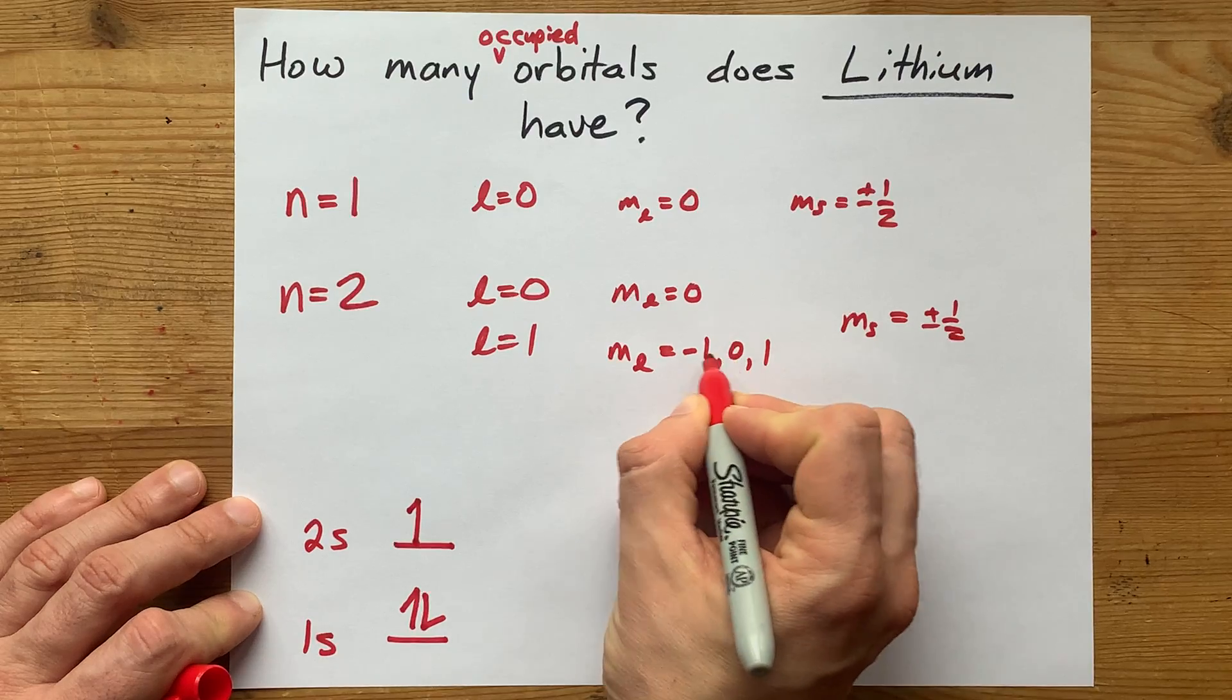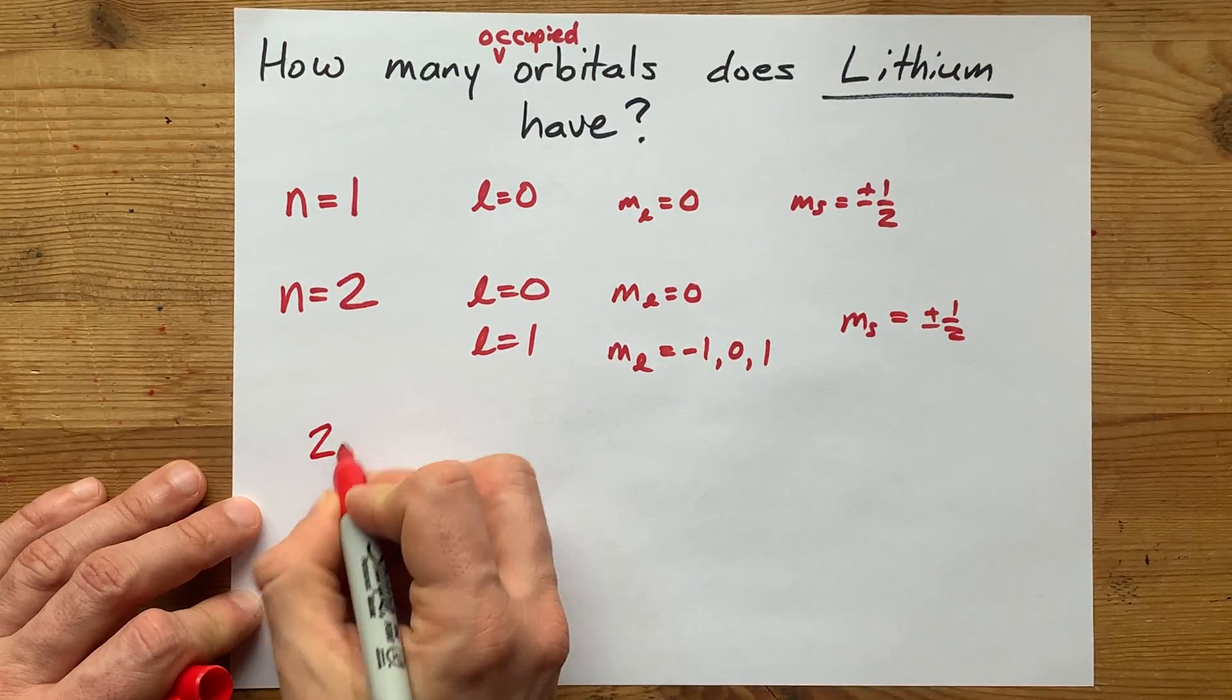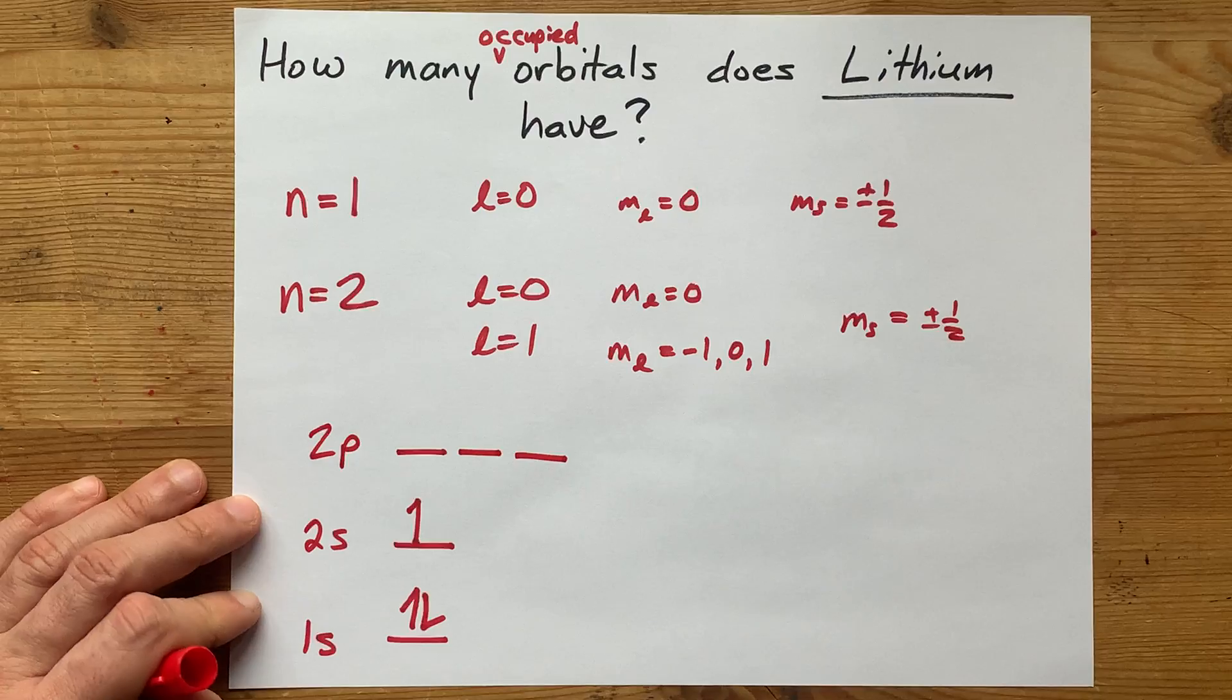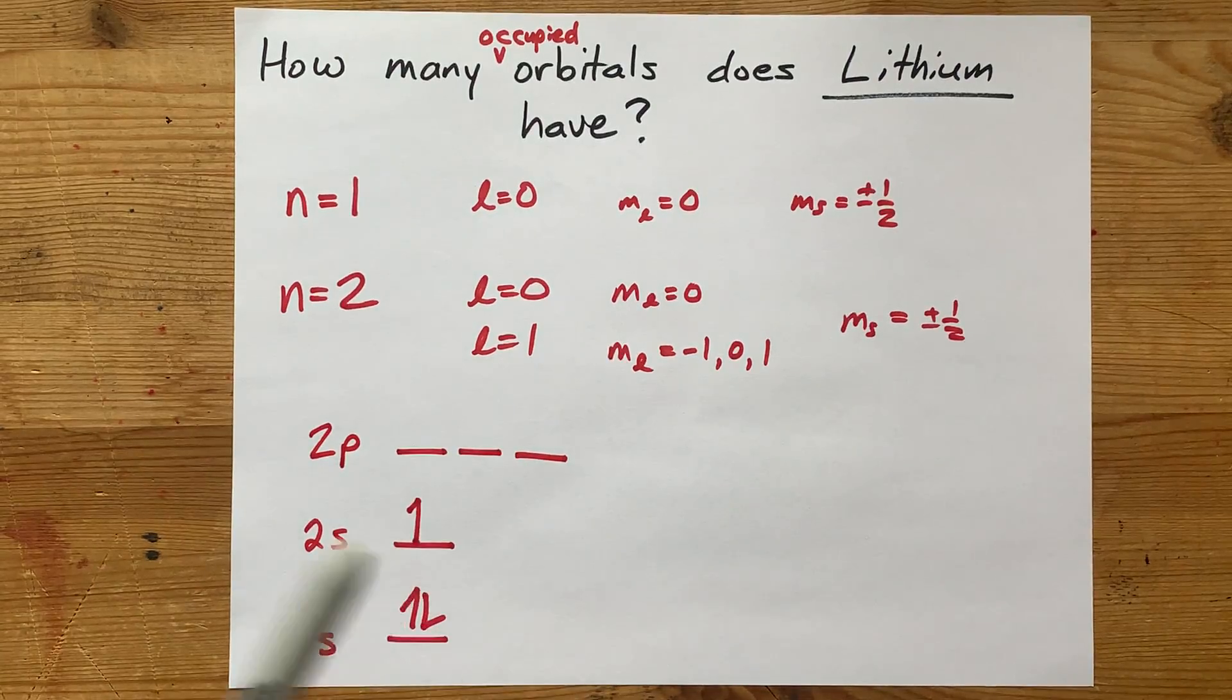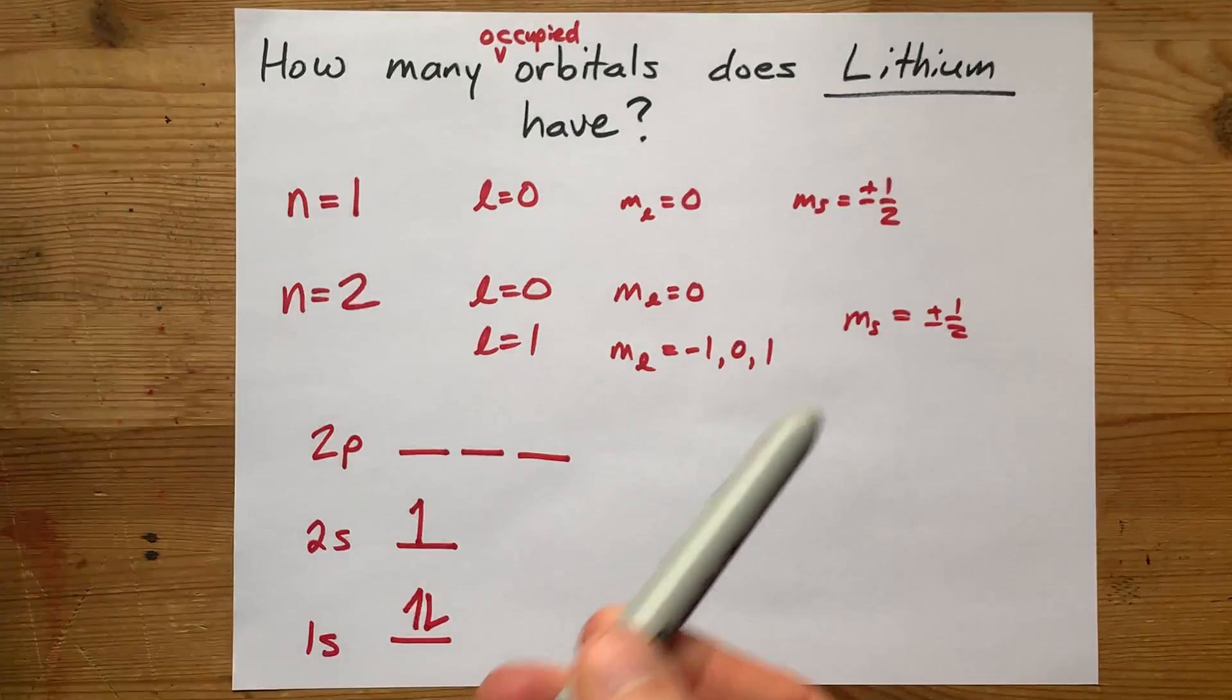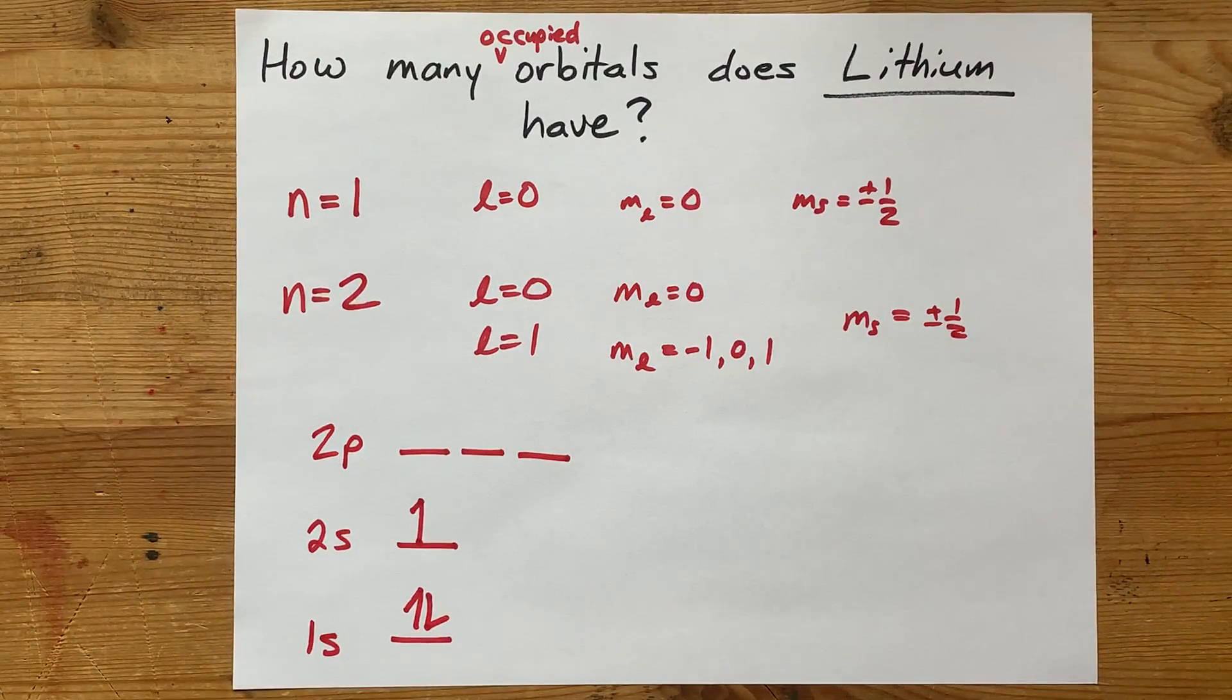And the fact that we have three options here for ml is why the 2p sublevel usually has three of these, but they're all empty for lithium because lithium only has one electron in its second shell. So the answer is,